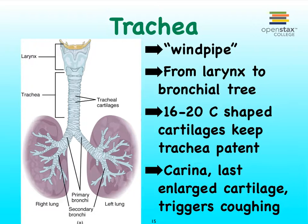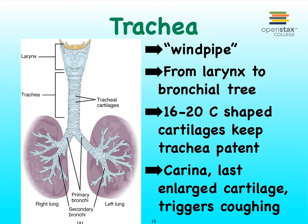The trachea, which we like to call the windpipe, extends from our larynx — remember, here we have our larynx with this very characteristic thyroid cartilage. It extends from the inferior portion of the larynx all the way down to what we refer to as the bronchial tree, meaning at the point where it starts to split. You can see the bronchial tree help form the lungs here.